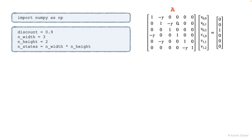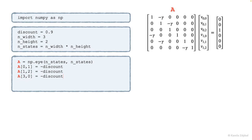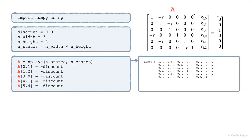So this is the matrix A. Notice that it actually starts as an identity matrix, but then it has these additional minus gamma terms. So we can initialize it as an identity matrix and then fill in all the entries that have this minus gamma. And finally we can print that matrix just to double check and make sure that we coded it right.